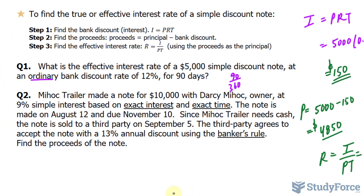That would be the effective interest rate. In question number two, Myhawk Trailer made a note of $10,000 with Darcy Myhawk, owner, at 9% simple interest based on exact interest. We assume 365 days and exact time. The note is made on August 12 and due November 10. Since Myhawk Trailer needs cash, the note is sold to a third party on September 5th. The third party agrees to accept the note with a 13% annual discount using the bankers rule. Find the proceeds of the note.